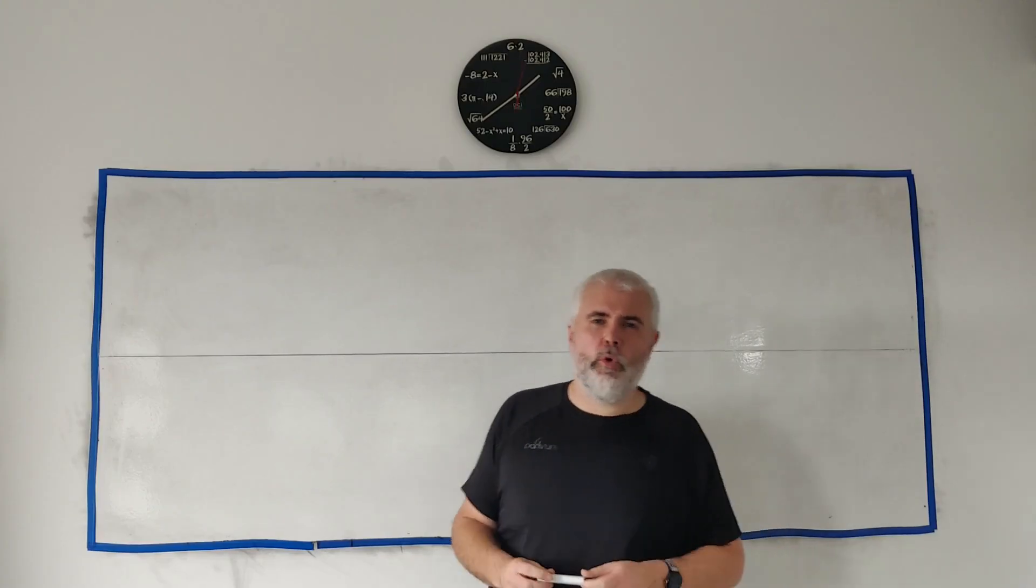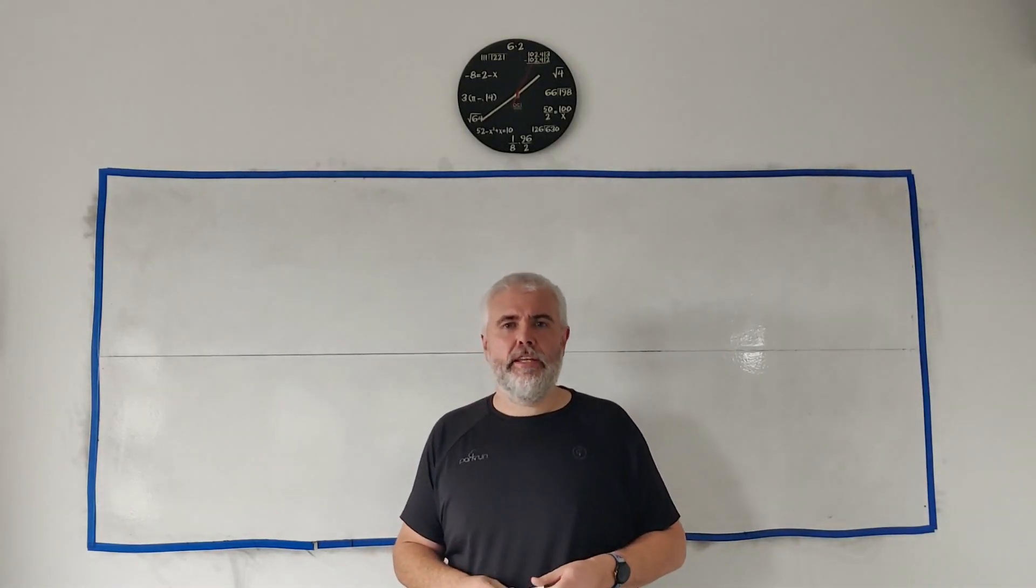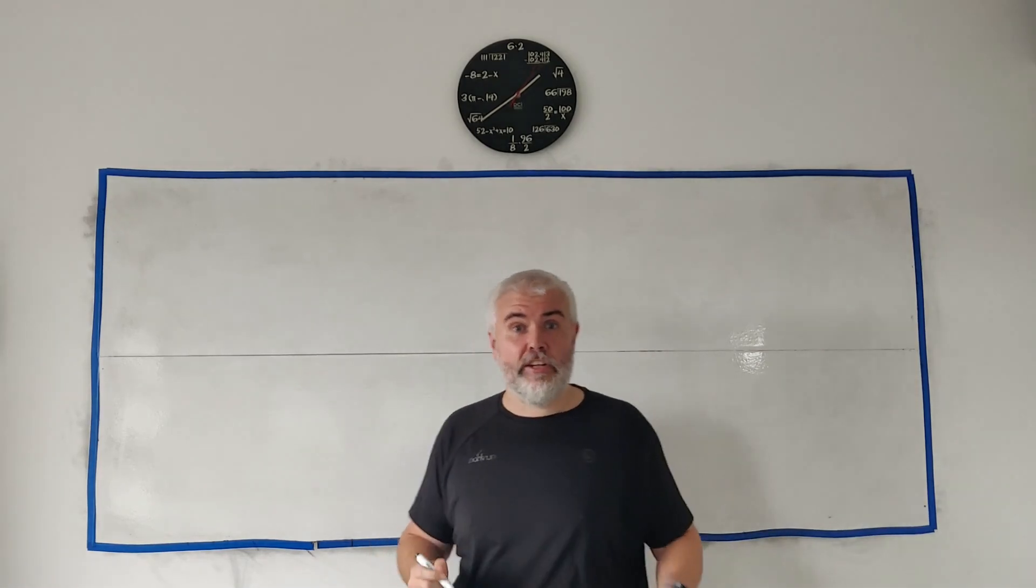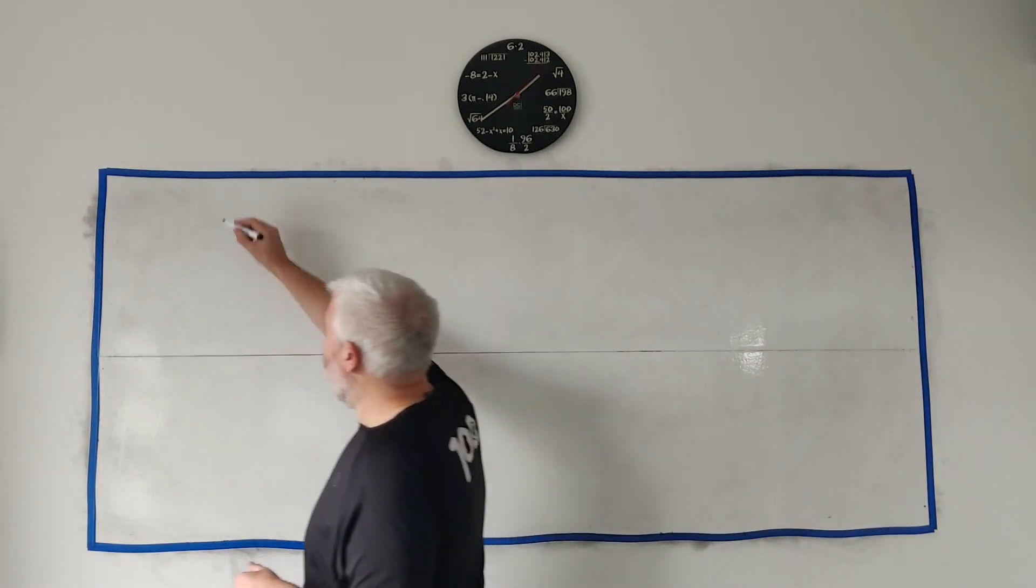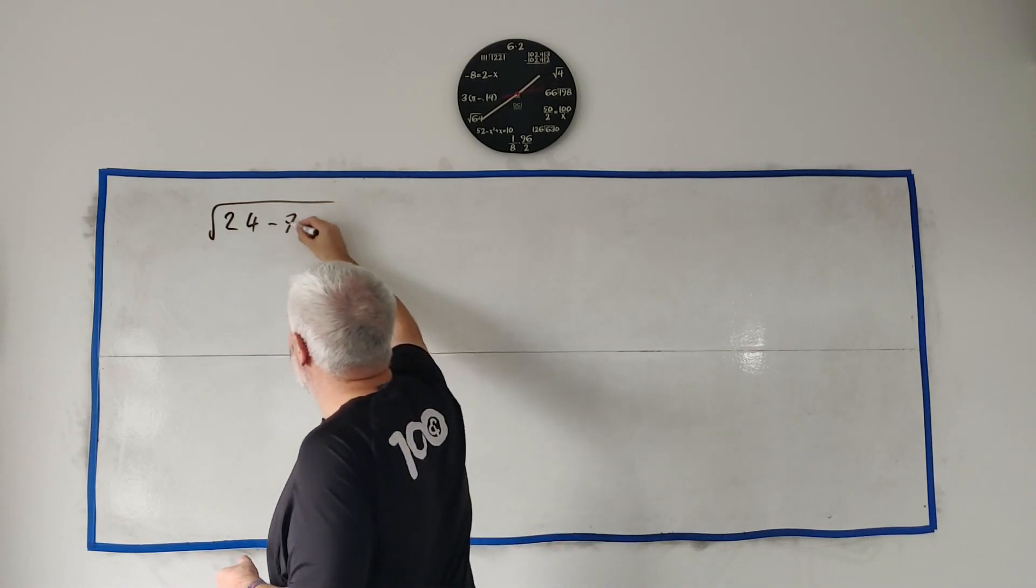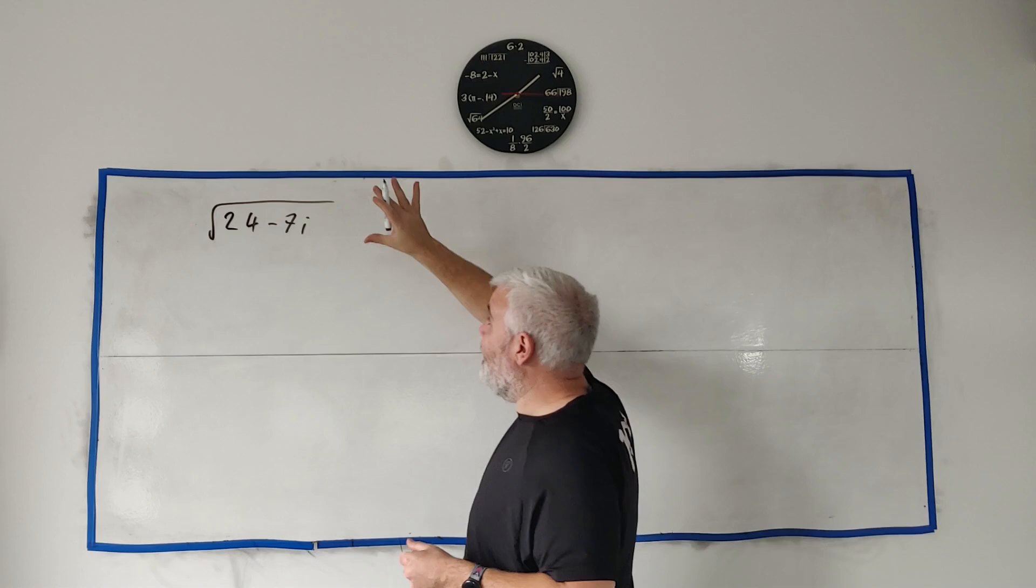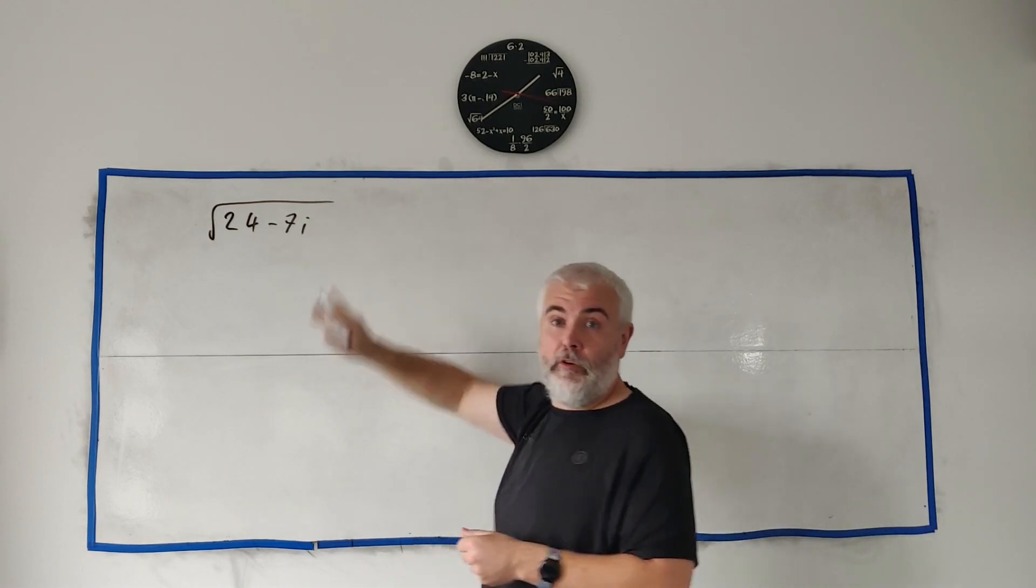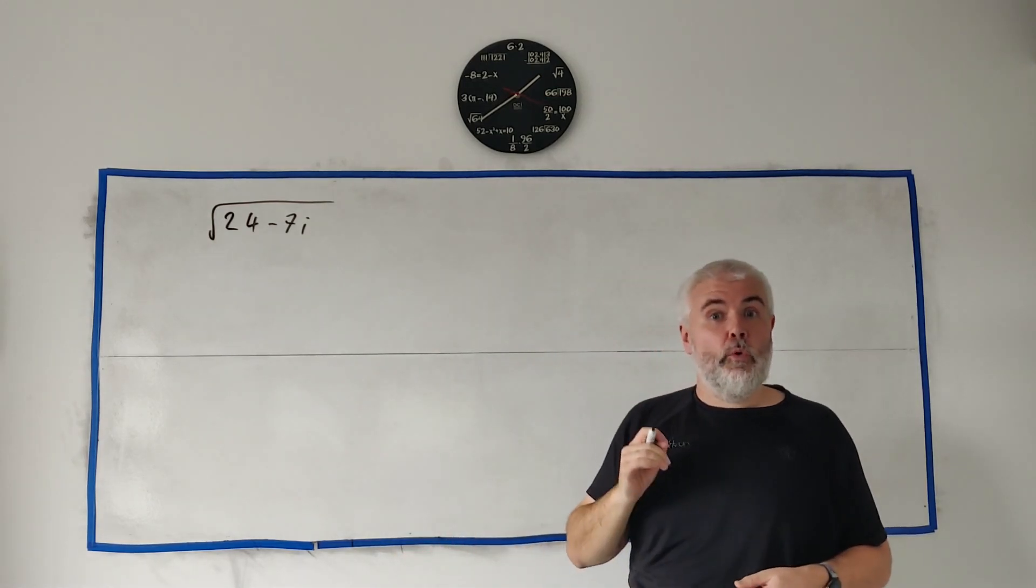In question 3, one of the more difficult parts is to understand exactly what they're asking us to do. Basically, they're asking us to get the square root of 24 minus 7i and give its answer in the form of x plus yi.